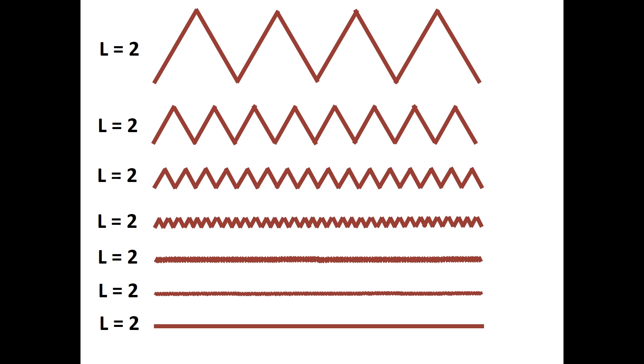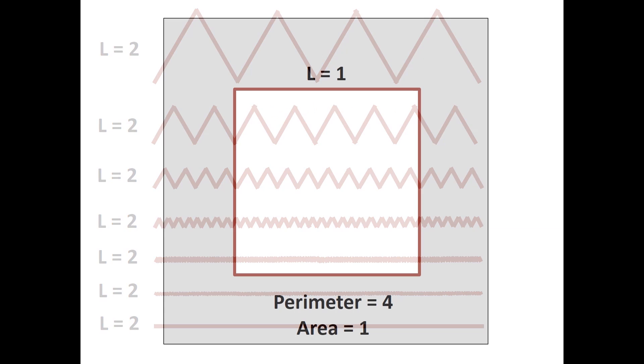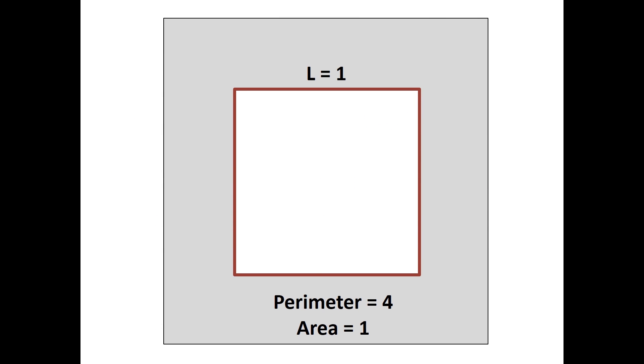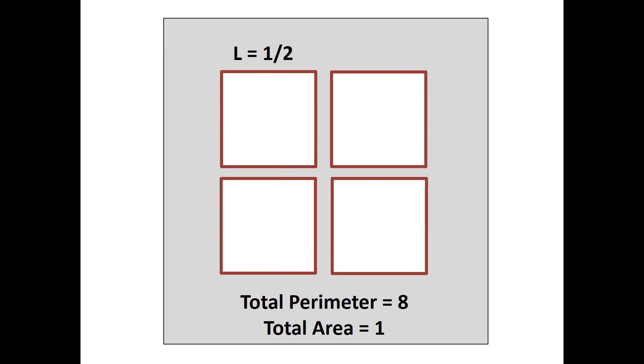Let's use the same idea for area. Suppose we cut a square window, shown in red, in a material, shown in gray. If the length is 1, the perimeter is 4, and the area is 1. Now let's break that window into 4 smaller windows of side length 1 half. The total area is still 1, but the perimeter is 8.